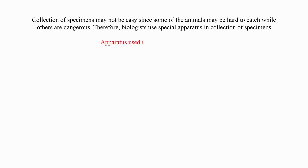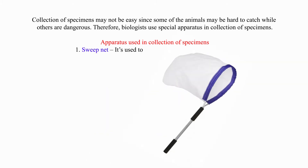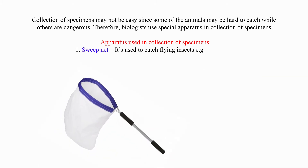Apparatus used in collection of specimens. 1. Sweep net — it is used to catch flying insects, e.g. butterflies.